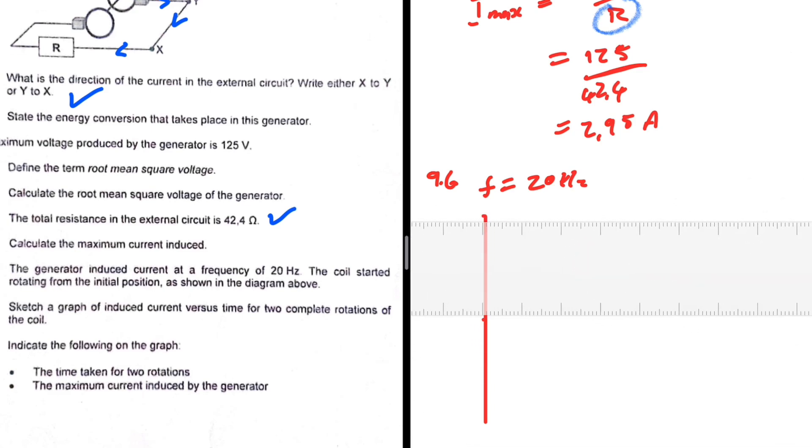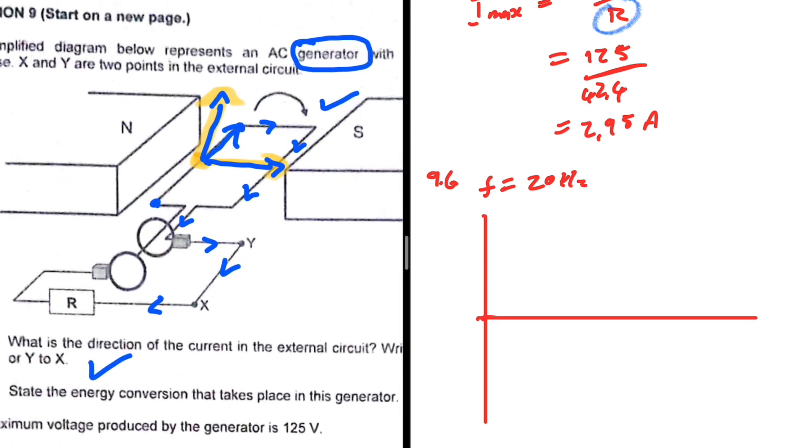What are we supposed to indicate? The time taken for the two rotations and the maximum current induced by the generator. Is the position in the sketch going to give us a current of zero or the maximum current at t equals zero? That is what we need to figure out first. Here we have current in amperes. This position that we have in our sketch is where we have our maximum current.